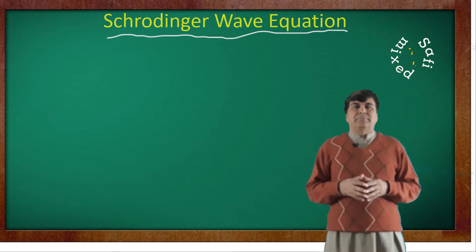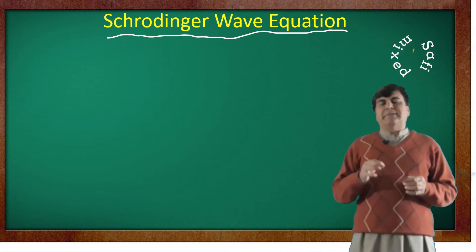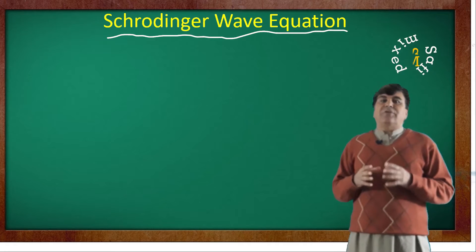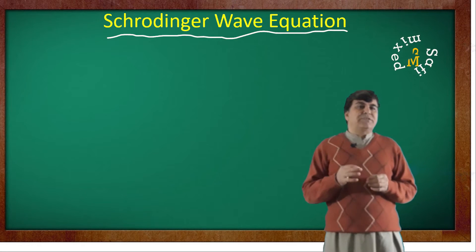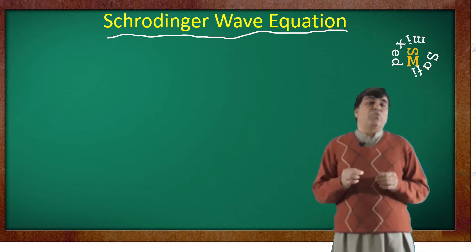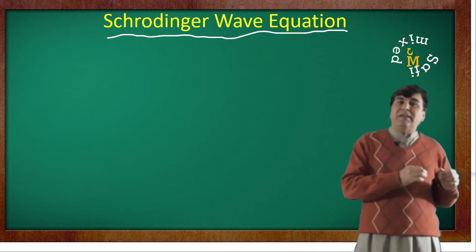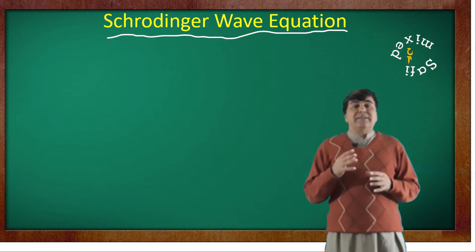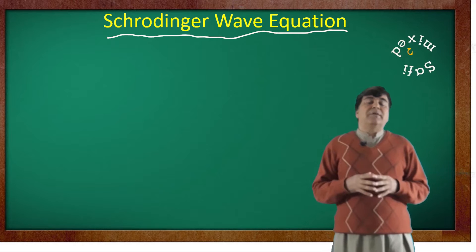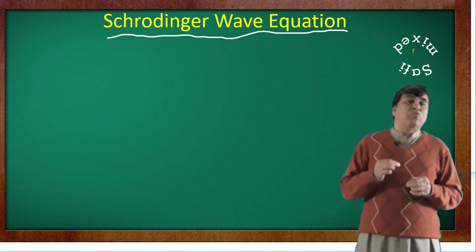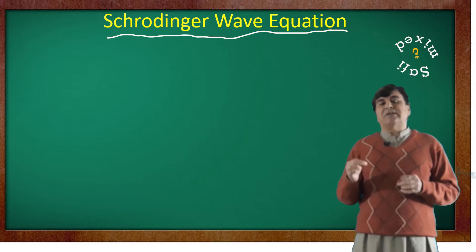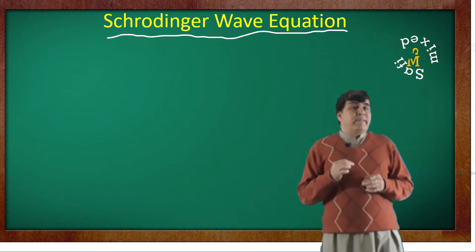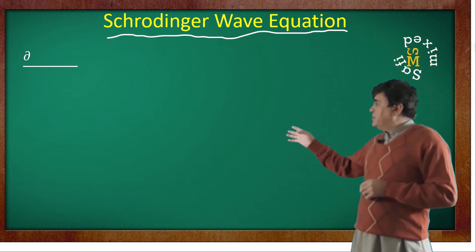Now let's move to the focus of this video. In his first attempt in the search of a fundamental equation, Schrödinger merged the classical electromagnetic equation with Einstein's photon theory and the de Broglie hypothesis, hoping that this way all the quantum mechanical properties experimentally observed would embed into a single equation. He started from this electromagnetic equation.